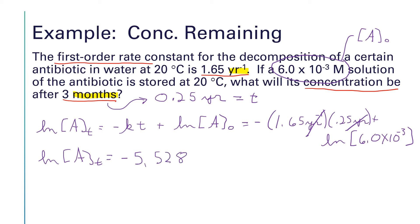And I get a value for that right hand side of negative 5.528. Now, when you look at your calculator, the natural log is the button that says ln. It's usually right next door to the base 10 log button, which says log.